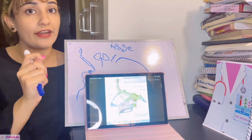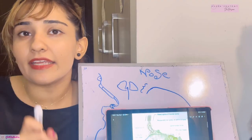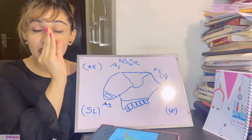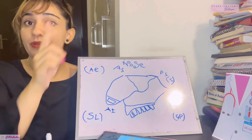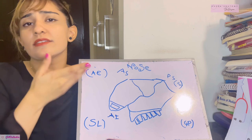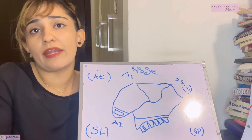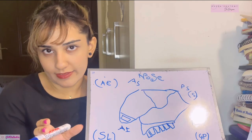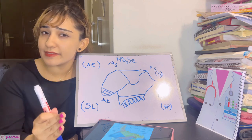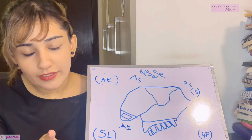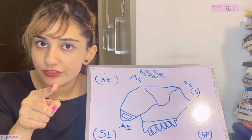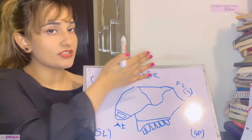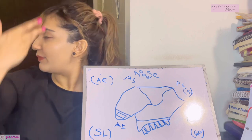The nasal septum is important because it has an area very prone to bleeding. The nasal septum is a median osteocartilaginous part that separates the nasal cavity into two halves — that is its definition. Since it's osteocartilaginous, it is formed partly by bone (osseo) and partly by cartilage. I've drawn a diagram: imagine taking a cross-section of the head viewed from the front.